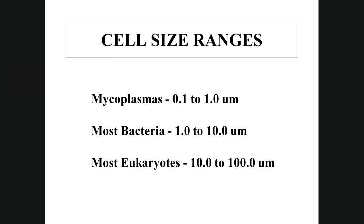Cell size ranges: eukaryotes are 10–100 micrometers (400x magnification is usually enough); bacteria are 1–10 micrometers (1000x is better to see their shape and arrangement); mycoplasmas are 0.1–1 micrometer in diameter. Mycoplasmas still obey the laws of cell theory — they can divide and carry out cellular processes.